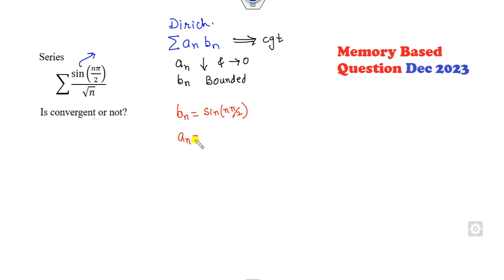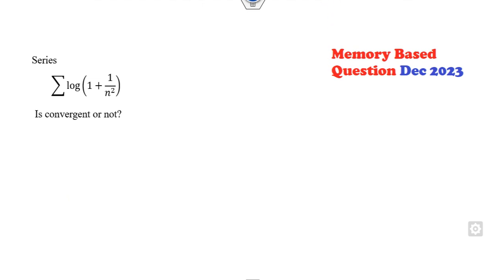So clearly, which is bounded? If I consider b_n is sine of this series, a_n is one over root n. Now clearly, this is decreasing and goes to zero, and this is bounded. So both the properties are satisfied. What is the meaning of that? This is a convergent series.